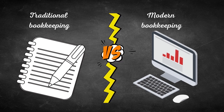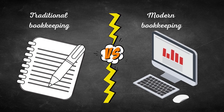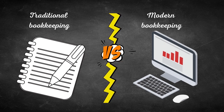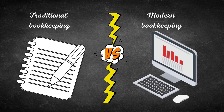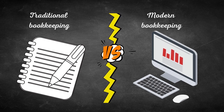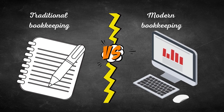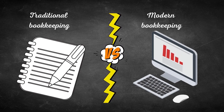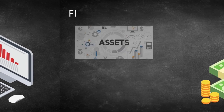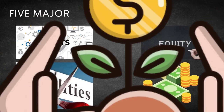Bear in mind that while accounting software is amazingly fast and accurate in processing the information that is entered, the software is unable to detect whether some transactions have been omitted, entered twice, or if incorrect accounts were used. Fraudulent transactions and amounts could also be entered if a company fails to have internal controls.